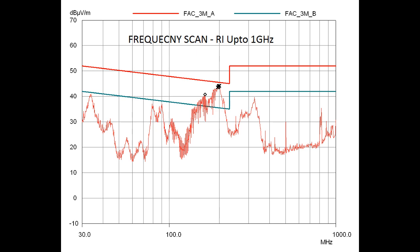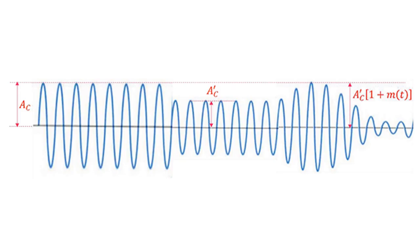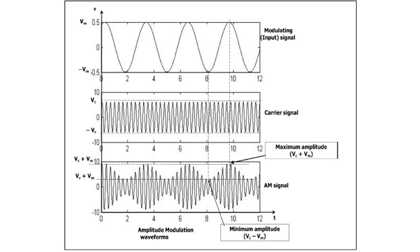Specified by the standards, the intensity of the testing field is represented as a value of an unmodulated signal. This signal is modulated by a sine wave at 1 kHz with 80% modulation depth when testing electromagnetic susceptibility. The real threat when radio frequency fields are radiated is simulated for the equipment under test by this modulation.